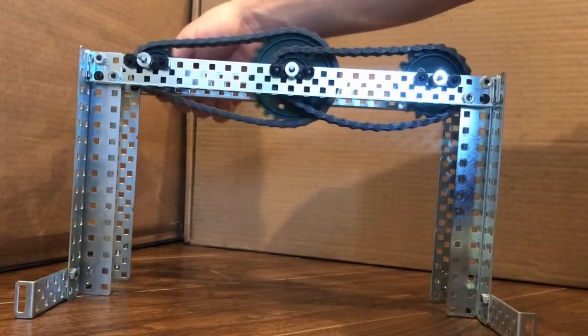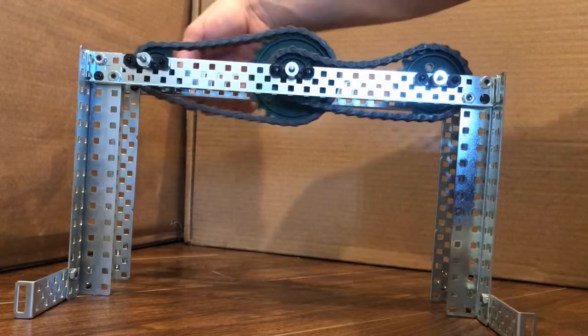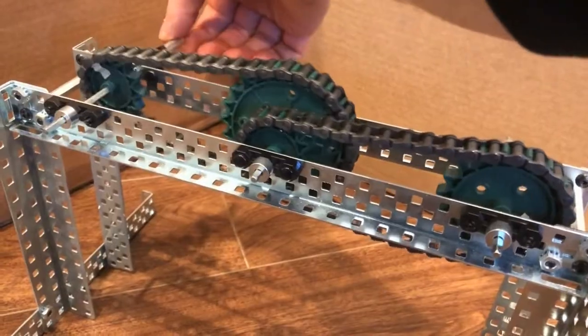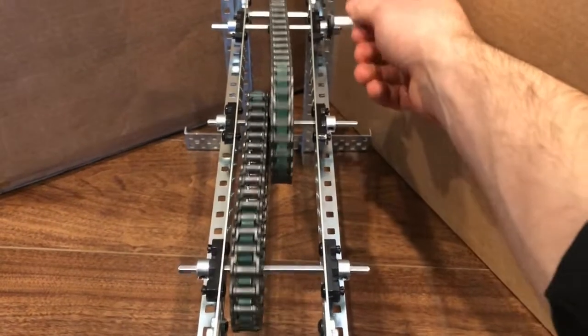Compound configurations can be made with multiple chains in one system or multiple sprockets on one axle. This will help change the torque and speed similar to what we learned about with compound gears.